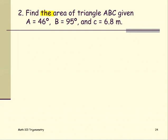In this example, we are going to find the area of triangle ABC given that angle A is 46 degrees, angle B is 95 degrees, and side C is 6.8 meters.